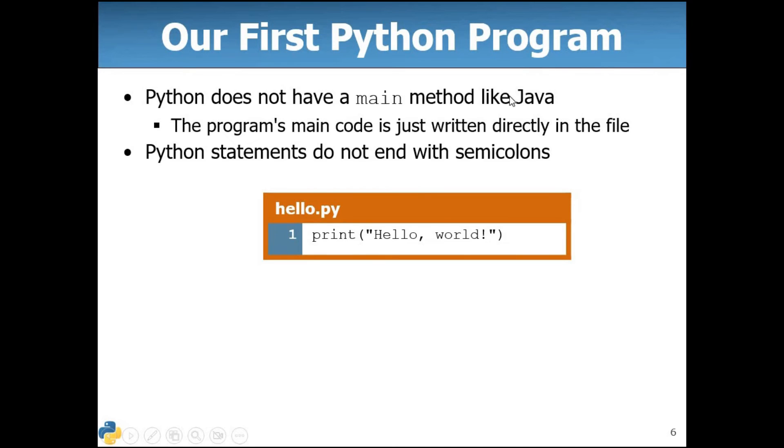Our first Python program. Python does not have a main method like Java. If you remember, if you are a Java developer, if you have studied Java before learning Python, you might have experience writing Java. First of all we have to define a class named main if you are a Java user. But in case of Python there's nothing to do with classes. It's not necessary to use a class in every program.